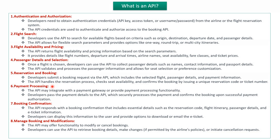The sixth one is the payment processing related API. This API may integrate with a payment gateway or provide payment processing functionality. Developers can pass payment details to this API, which securely processes the payment and confirms the booking upon successful payment authorization.